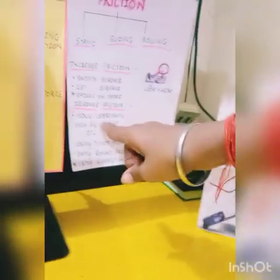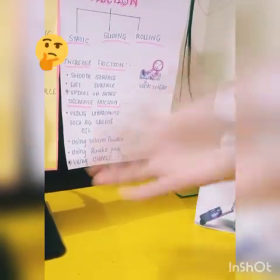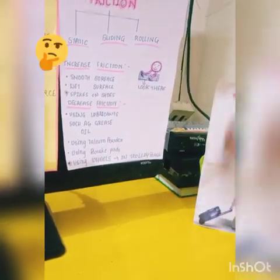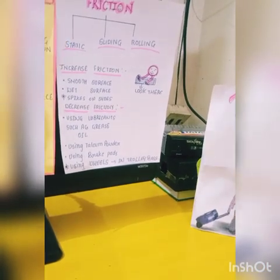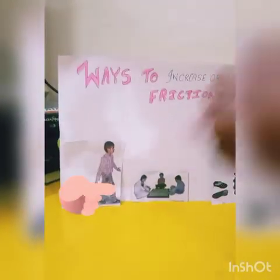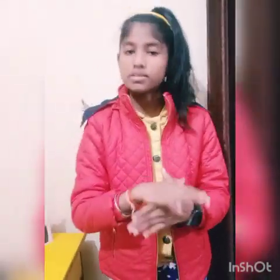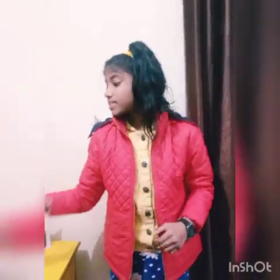How to decrease friction? Using lubricants. What are lubricants? Such as greasing and oiling — all these are examples of lubricants. For example, if on a bicycle we apply grease on a chain so that it can move smoothly and we can ride the bicycle carefully — this means we are lubricating to reduce friction.